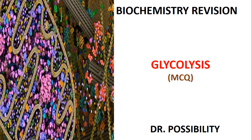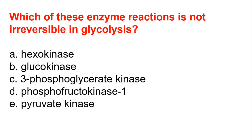So let's quickly look at some few questions. Question 1: which of these enzyme reactions is not irreversible in glycolysis? A, hexokinase. B, glucokinase. C, 3-phosphoglycerate kinase. D, phosphofructokinase-1. And E, pyruvate kinase.